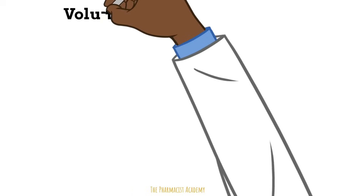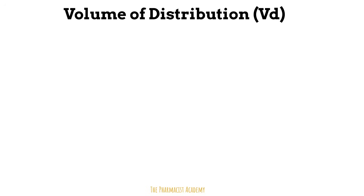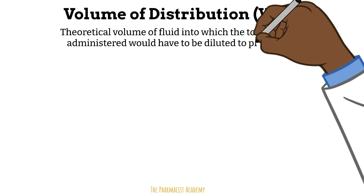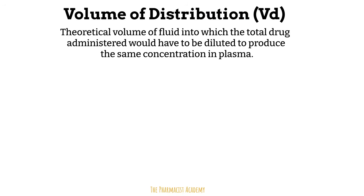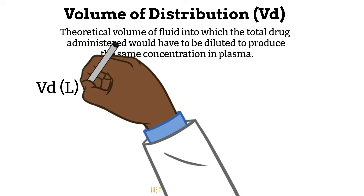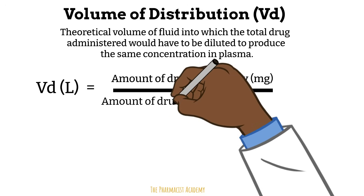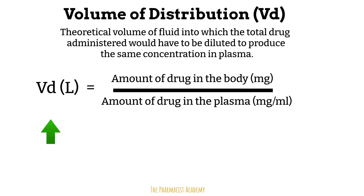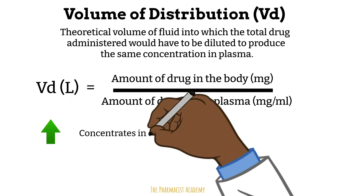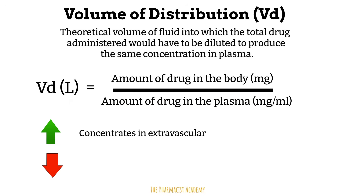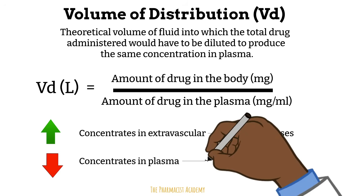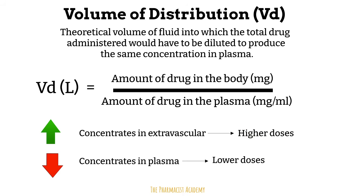This brings us to the volume of distribution, which tells you the propensity of the drug to remain in the plasma or redistribute into the tissues. It is defined as the theoretical volume of fluid into which the total drug administered would have to be diluted to produce the same concentration in the plasma. The equation is the amount of drug in the body (mg) over the amount of drug in the plasma (mg per unit volume). A drug with high volume of distribution has a propensity to leave the plasma and enter extravascular compartments. Conversely, a low volume of distribution means the drug tends to remain in the plasma. When volume of distribution is high, higher doses are required to achieve a given plasma concentration; when it is low, lower doses are needed.